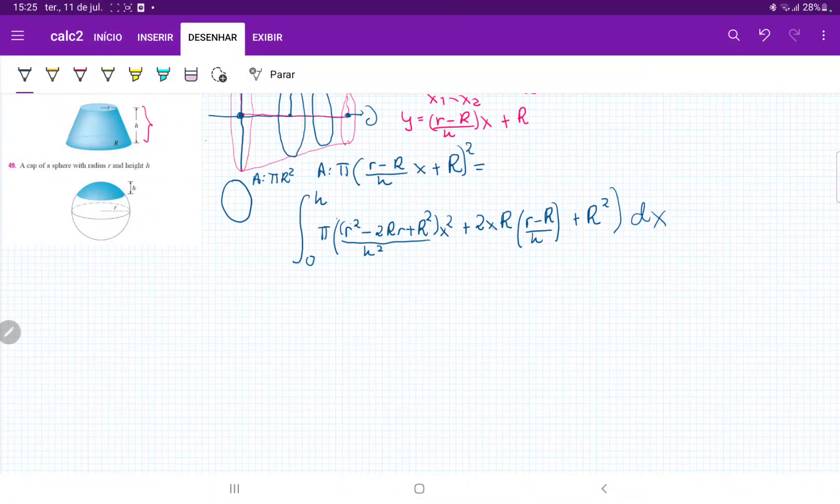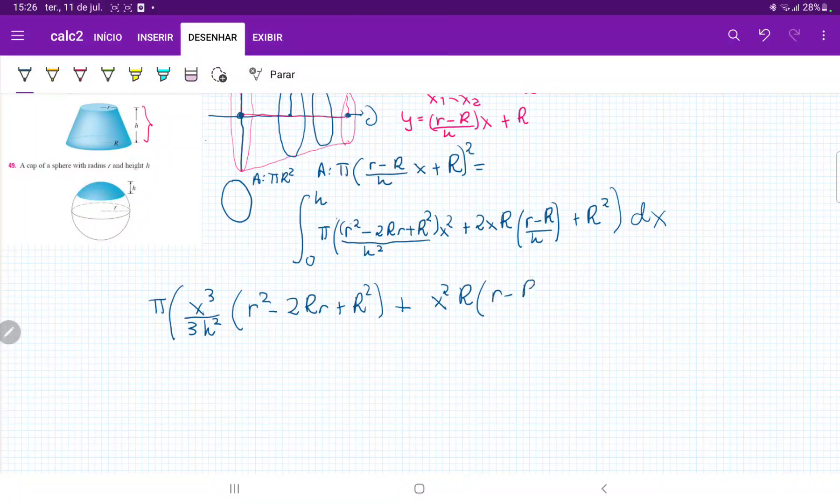So all these r's, they're just constants, and what we're integrating with is with respect to x. So we have here pi outside times x cubed over 3, that's the integral of the first, and then times h squared on the bottom, and then times all this stuff, r squared minus 2 capital R little r plus R squared. And then plus, this is going to be x squared over 2, so that's going to be x squared over 2, which cancels out with that 2, so just plus x squared r times this, and then plus R squared x. And all of this evaluated from 0 to h, so when we plug in our boundaries, the lower one's going to disappear because it's going to be 0 for everything.